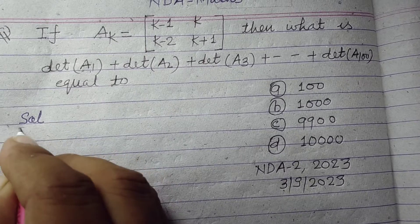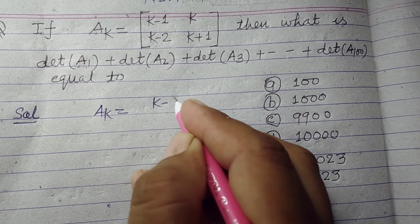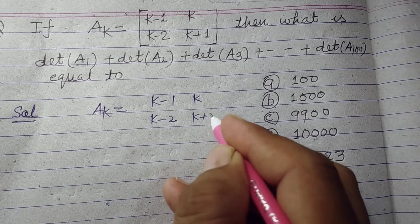So student, here Ak is given to us as k-1, k, k-2, k+1.